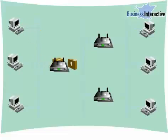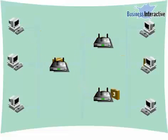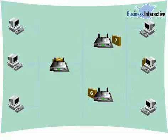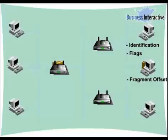Packets larger than MTU can be sent across the network by breaking them into smaller fragments and then reassembled at the receiver. These packets are reassembled on the basis of identification, fragmentation flags, and fragmentation offset fields in the header.